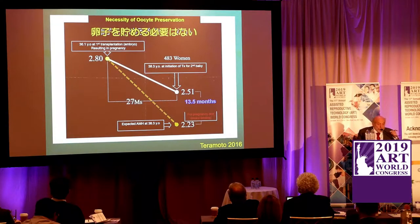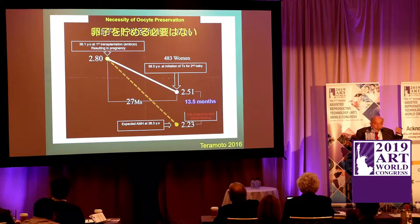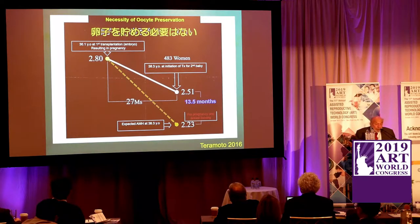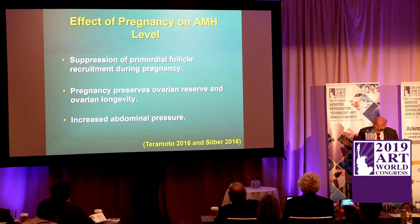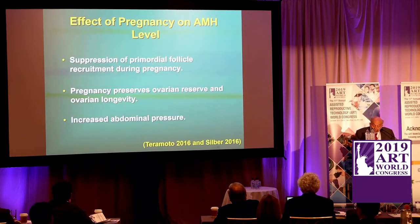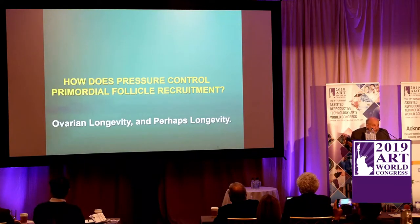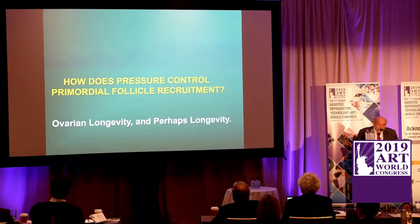Terramoto has shown in a large population that during pregnancy the normal reduction of AMH stops. So if a woman has 15 pregnancies in grand multiples, her ovarian longevity will be increased. Suppression of primordial follicle recruitment occurs during pregnancy, and pregnancy preserves ovarian reserve and ovarian longevity because of increased abdominal pressure. This relates to my main topic about ovarian longevity and making eggs from skin cells and the plasticity of stem cells.